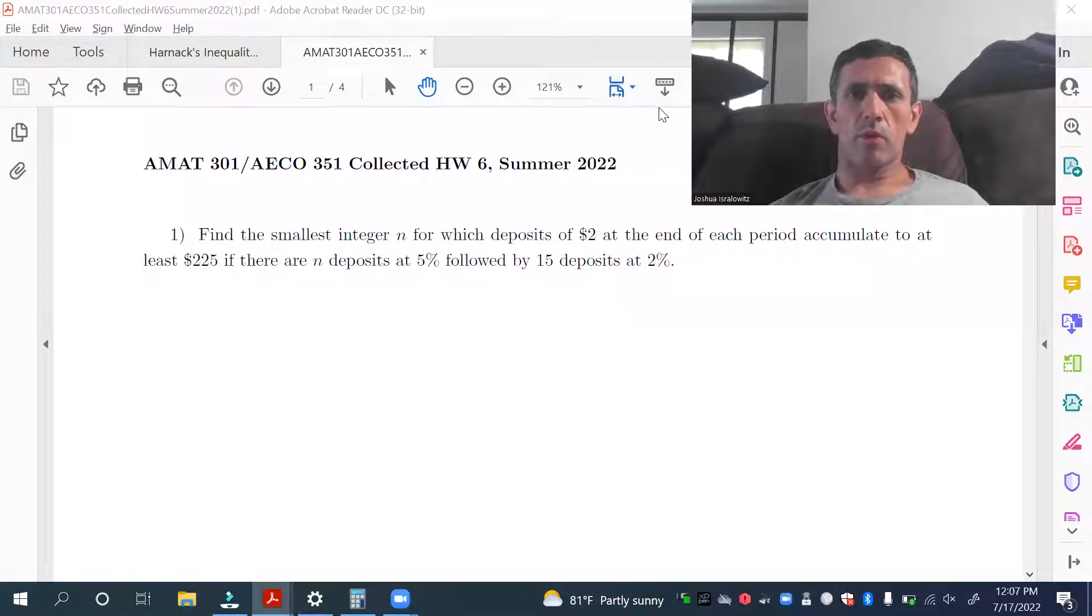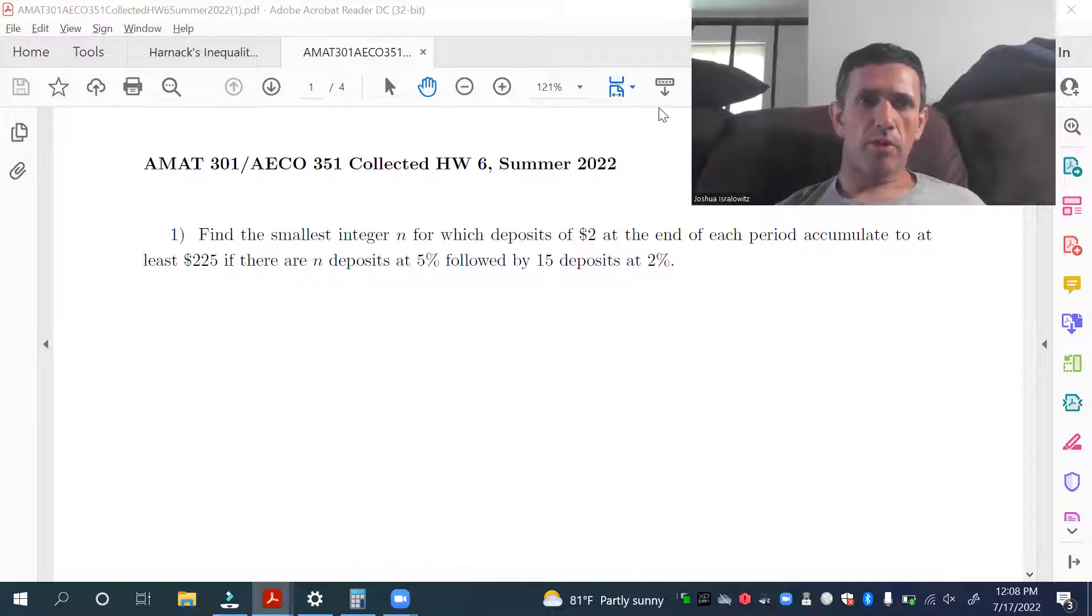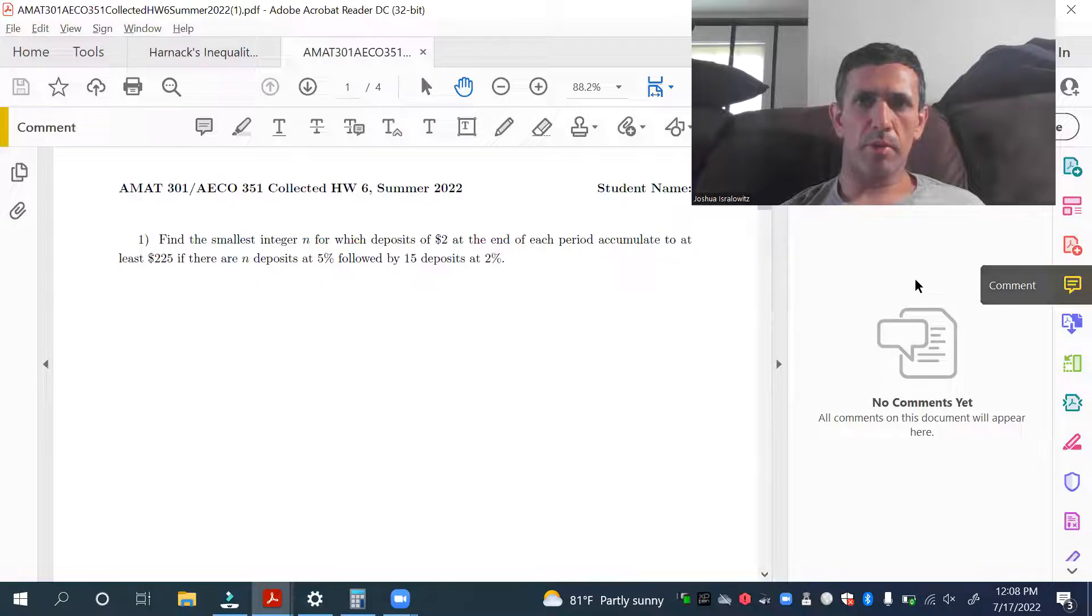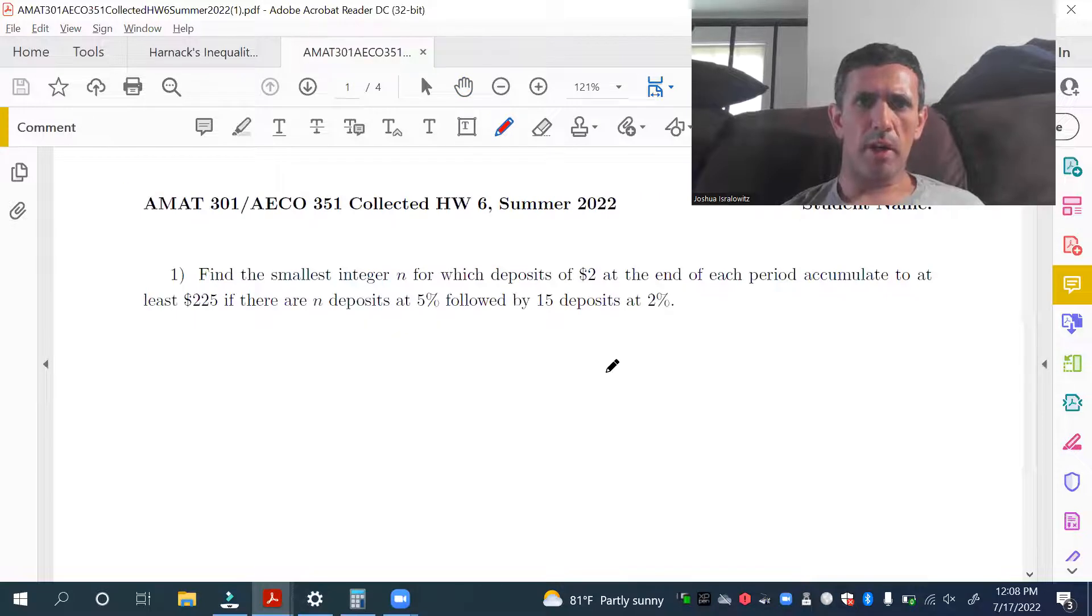Hello, everyone. What I want to do is go over homework six. The grades were average so far for the course, about a C average median. So for the first problem, we want to find the smallest integer end for which deposits of two at the end of each period accumulate to at least $225.